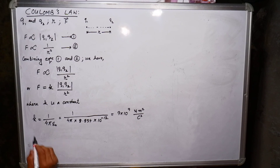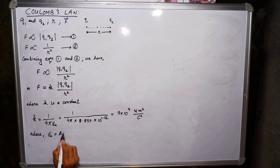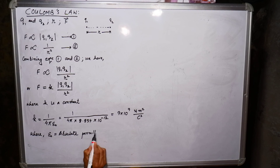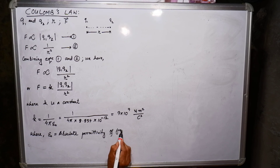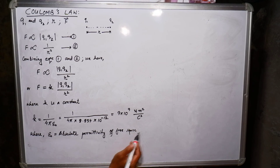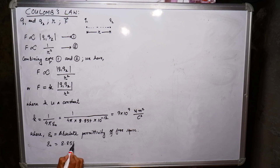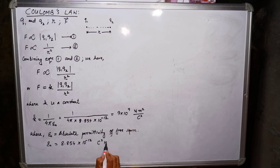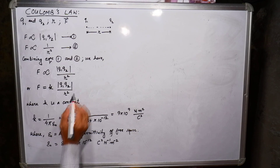Here ε₀ is the absolute permittivity of free space, and its value is ε₀ = 8.854 × 10⁻¹² C²/(N·m²). Name the Coulomb's law expression F = k·q1·q2/R² as equation number 3, and k = 1/(4π·ε₀) as equation number 4.